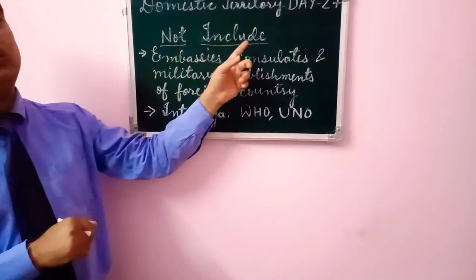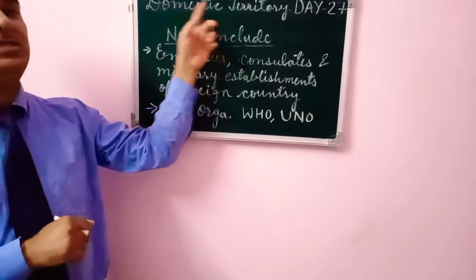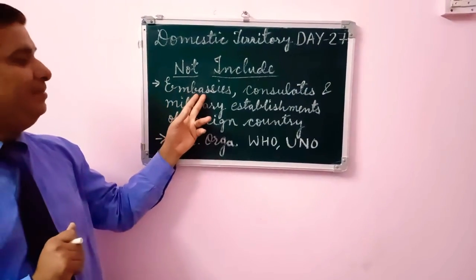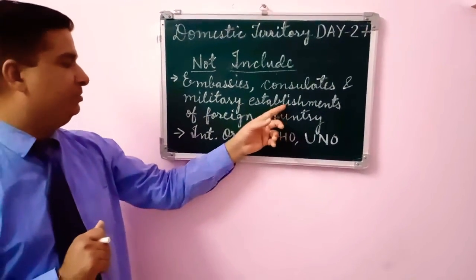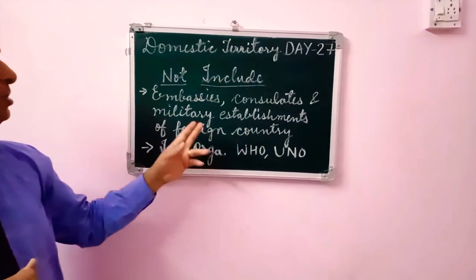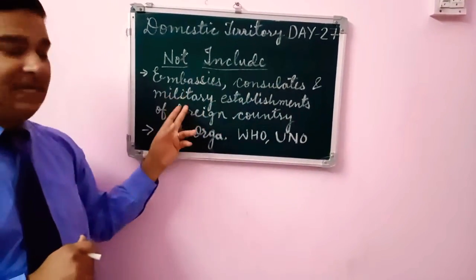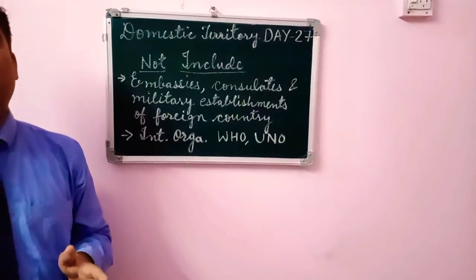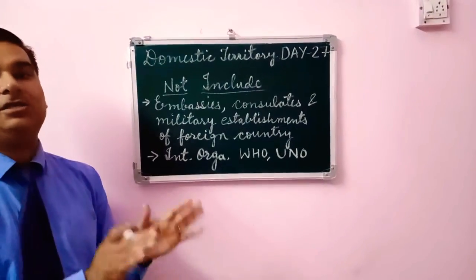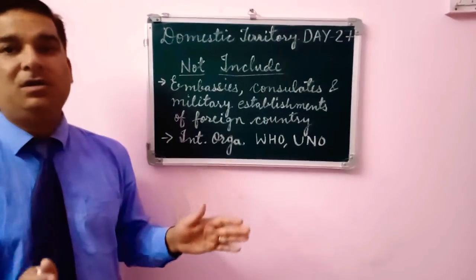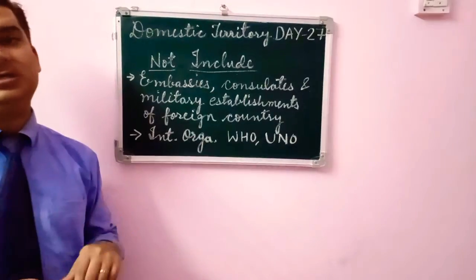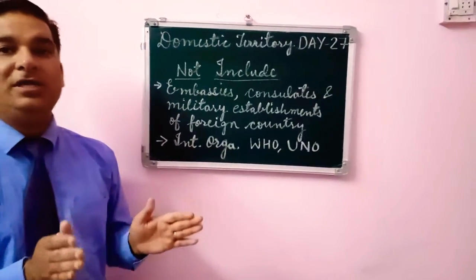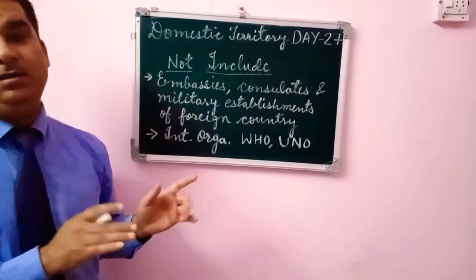Today we are going to study what we do not include in our Domestic Territory. The heading is: NOT INCLUDED IN DOMESTIC TERRITORY. This includes embassies, consulates, and military establishments of foreign countries located in India. For example, the Japanese embassy in India is not part of India's domestic territory — it is part of Japan's domestic territory.